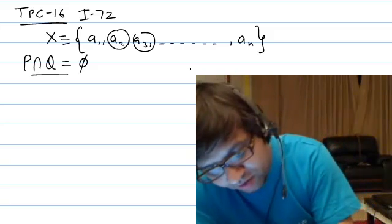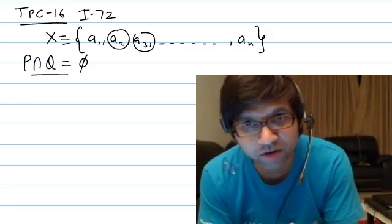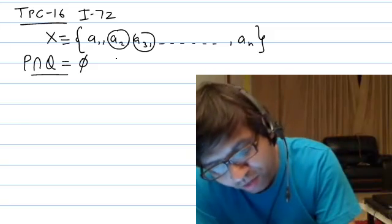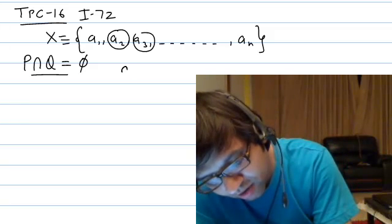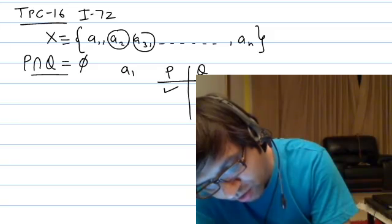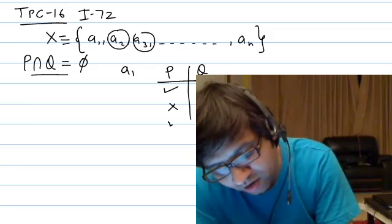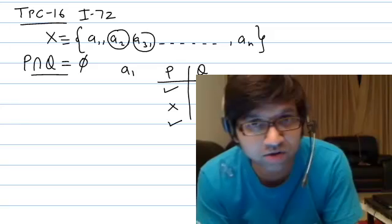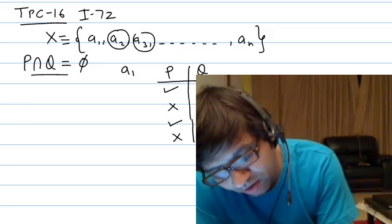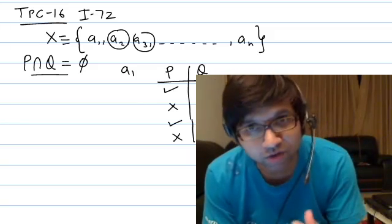We divide the job of forming subsets P and Q into n jobs — we decide about every element from a1 to an. For each element, there are four options: it can go in P but not in Q, it can go in Q but not in P, it can go in both P and Q, or the last option — it is selected in neither P nor Q.